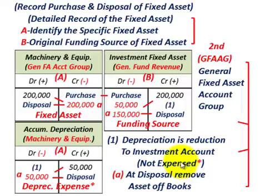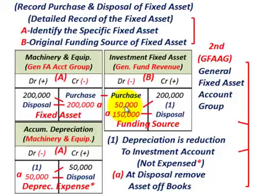Depreciation is not expensed here. The accumulated depreciation will be recorded in the government-wide statements. What we do here is recognize depreciation only through a reduction in the investment in our fixed asset account.